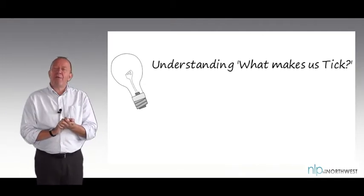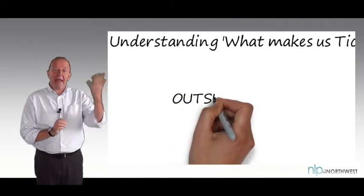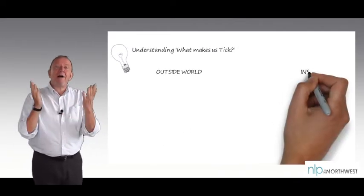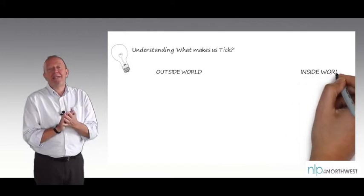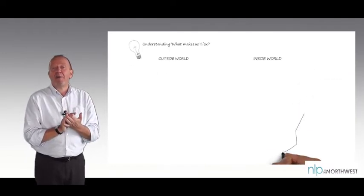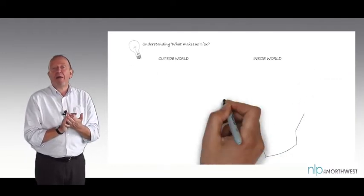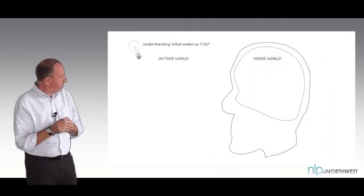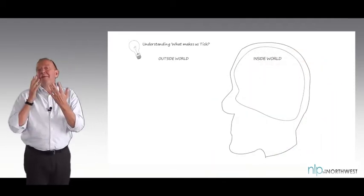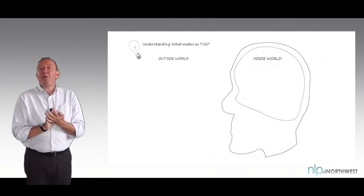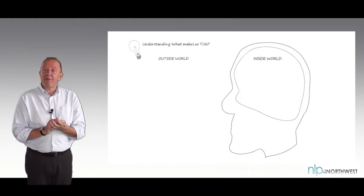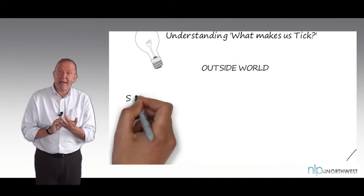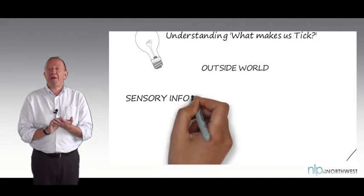All NLP is built on an understanding of the relationship between the outside world and our inside world. We tend to be in the same external environment as other people around us, but what goes on on the inside can be very, very different. So a starting question is: how do we know what goes on around us in the outside world? And the answer is as simple as it seems — we take in information through our five senses.